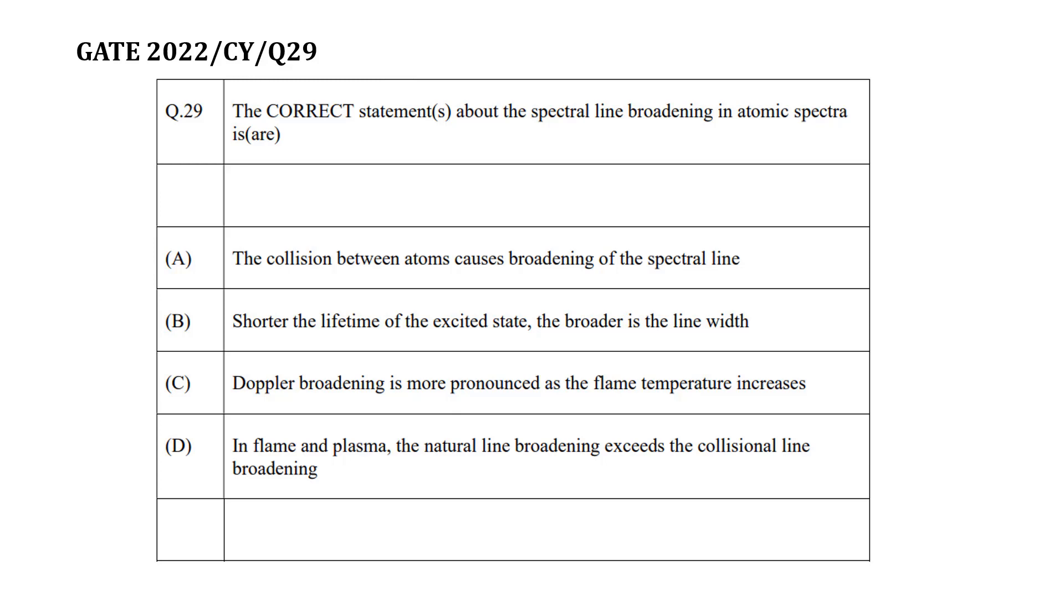Question number 29, GATE 2022 Chemistry. The question is to find out correct statements about the spectral line broadening in atomic spectra. Four options are given.